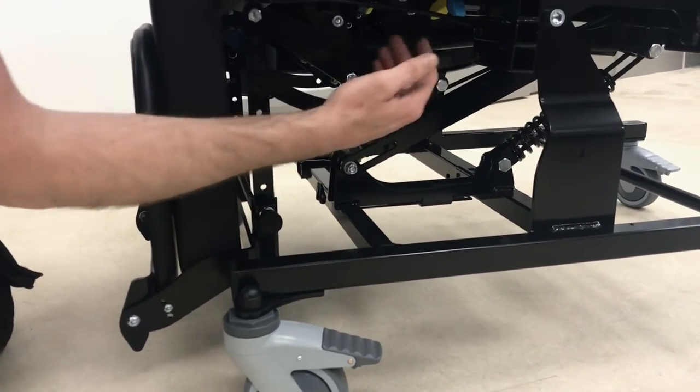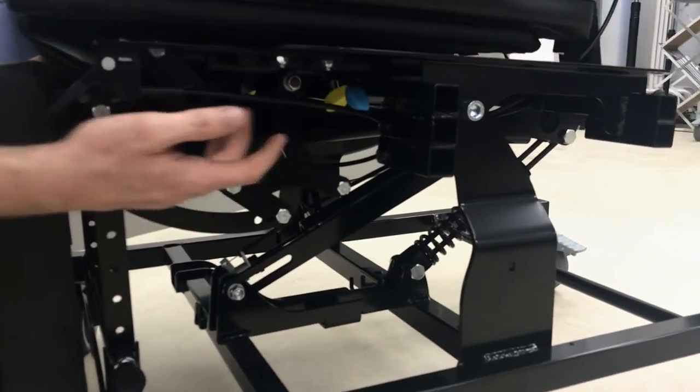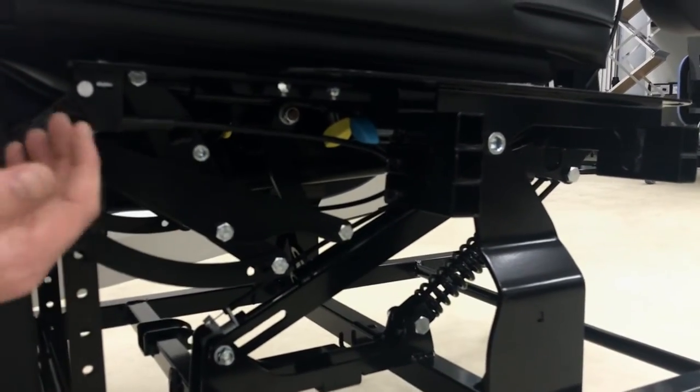So where the gas strut is, if you want to bring this leg rest forward, just loosen up the two yellows on either side of the leg rest and you can pull that forward to give yourself more access.